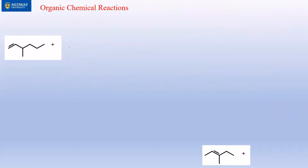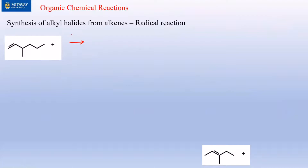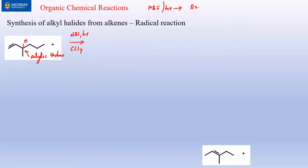Let's do another example. This molecule reacts with NBS, light, and carbon tetrachloride. NBS with light produces Br•. We identify our allylic carbon — that's the carbon adjacent to the double bond.